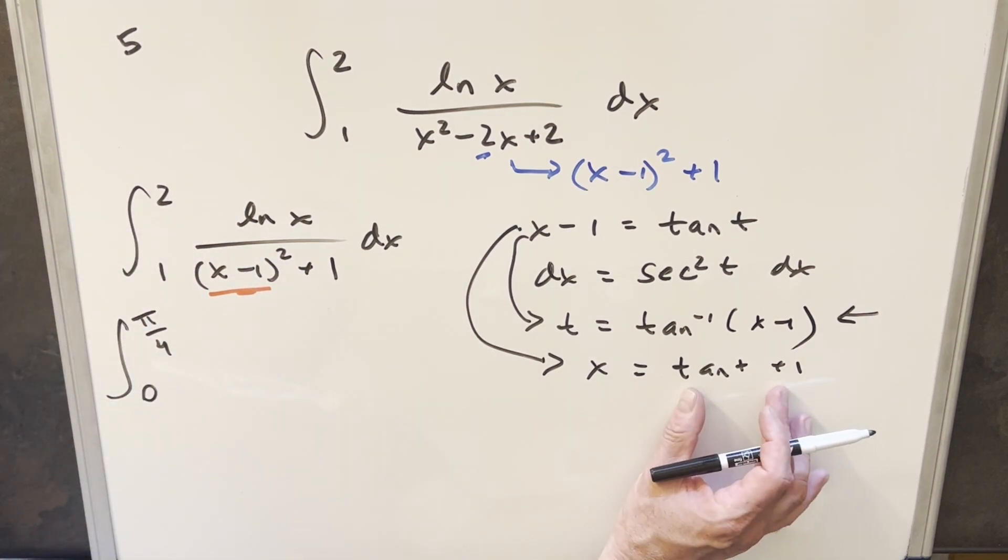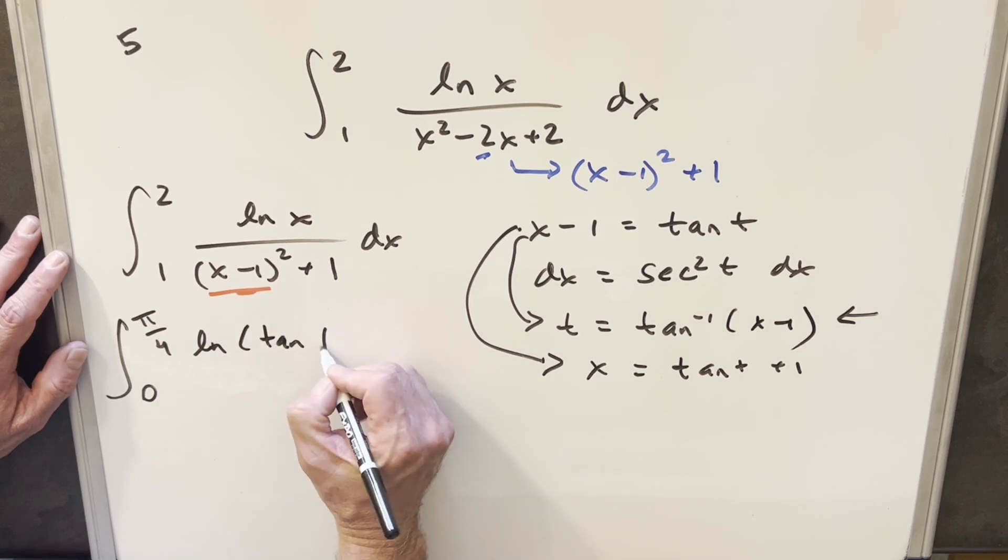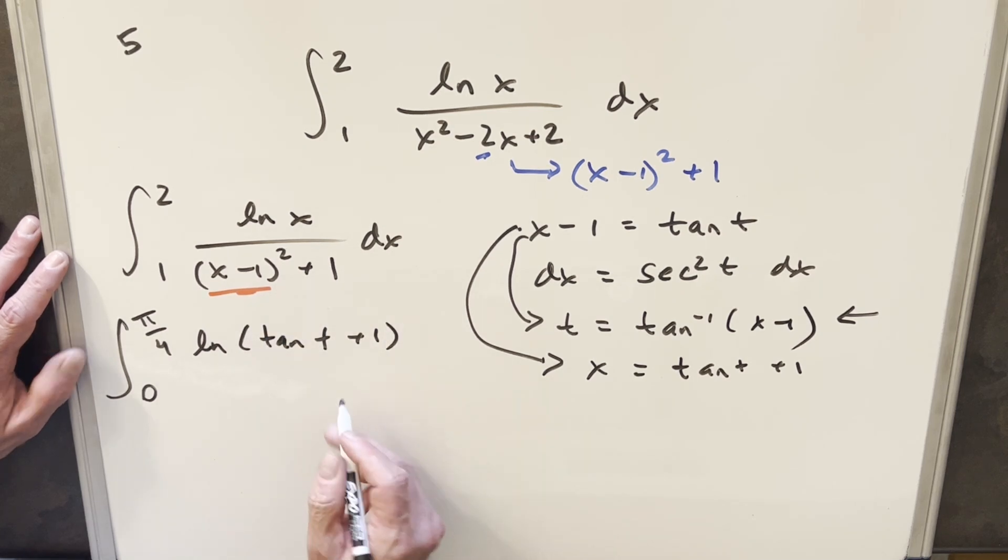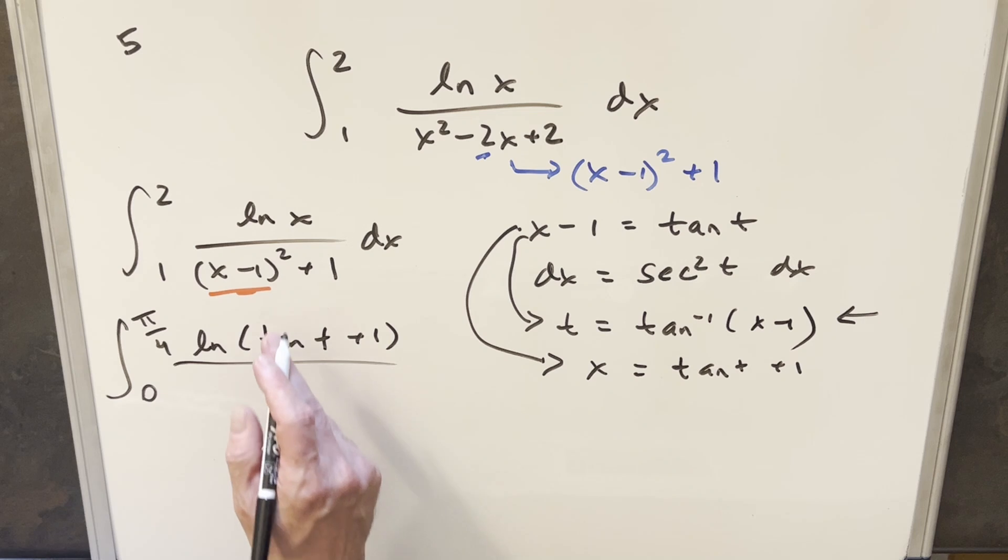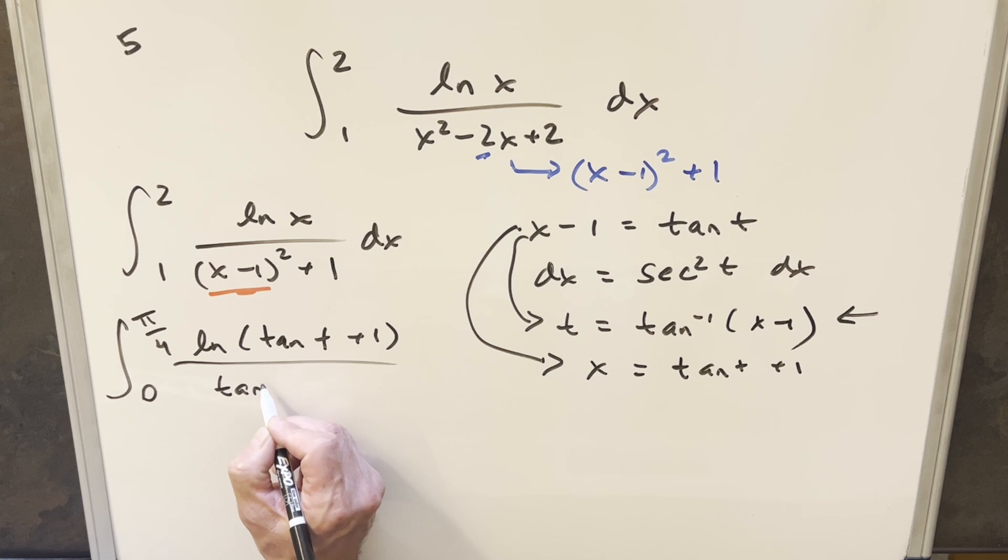Natural log of x, using this one here, this is going to become natural log of tan t plus 1. Okay, that's a little messy, but we can deal with it. This here, x minus 1, we set equal to tan t, so this becomes tan squared t.